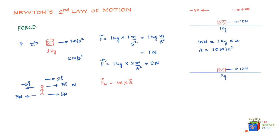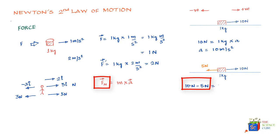In the second situation, in addition to the 10 Newton force to the right, there is another force of 5 Newtons acting to the left. The net force is 10 Newton (positive, rightward) minus 5 Newton (negative, leftward), equated with 1 kilogram times acceleration. Solving gives acceleration equal to 5 meters per second squared.